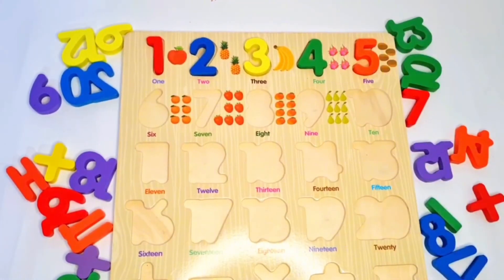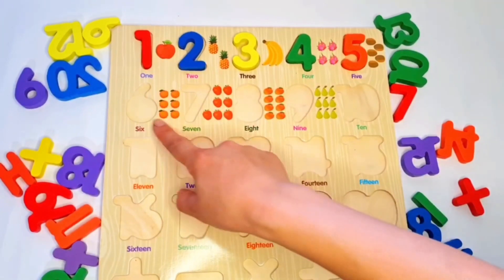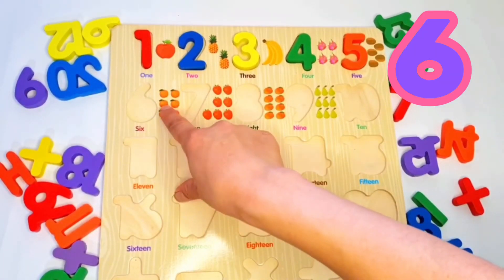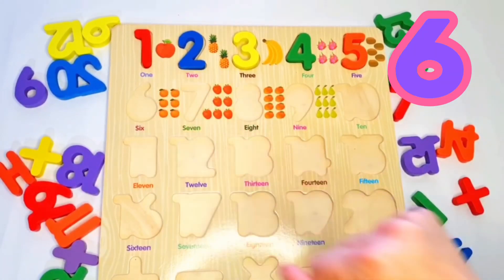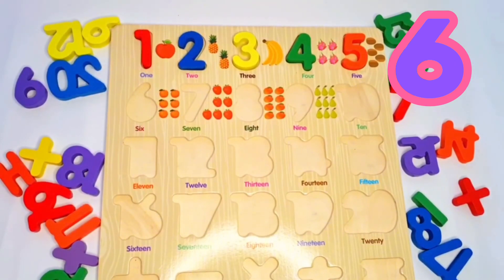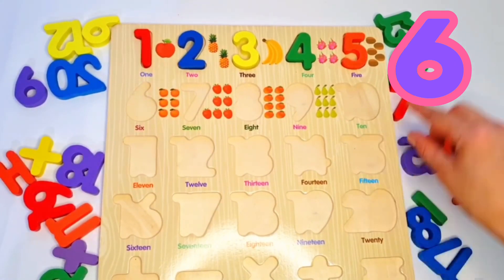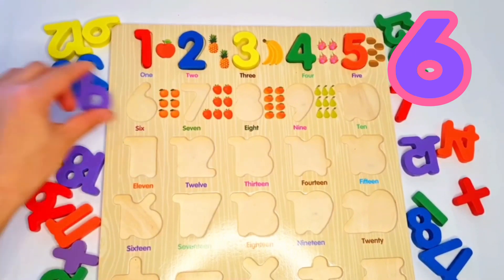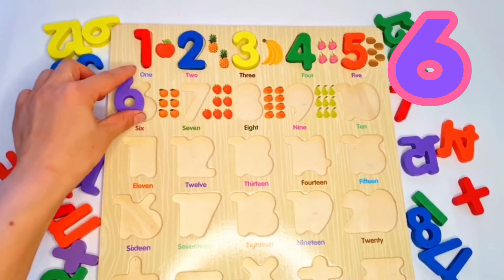Our next number is one two three four five six. Six orange. Let's put here six. Yeah, purple six.